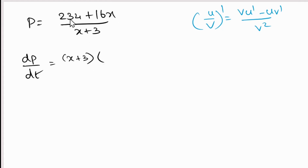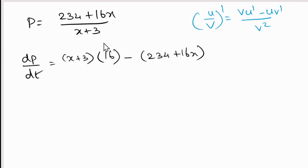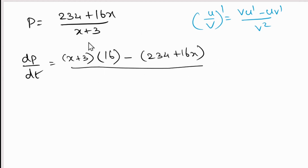Applying the quotient rule: the numerator is the derivative of (234 + 16x), which is 16, multiplied by the denominator (x + 3), minus the numerator (234 + 16x) multiplied by the derivative of (x + 3), which is 1. The whole expression is divided by (x + 3) squared.